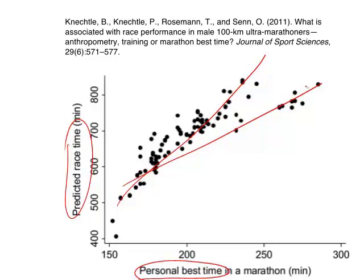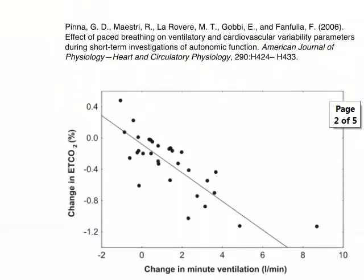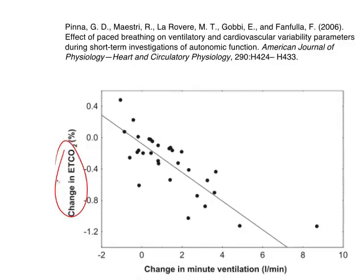Correlation coefficients are appropriate for describing the strength and the direction of linear relationships. Our second example comes from a study using paced breathing to study autonomic cardiovascular regulation. The scatter plot here shows the relationship between the change in end tidal CO2 and the change in minute ventilation. You can see that here the relationship between the two quantitative variables is approximately linear, so a correlation coefficient is appropriate.